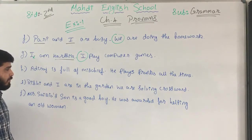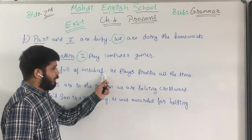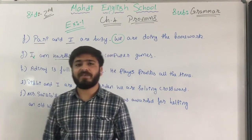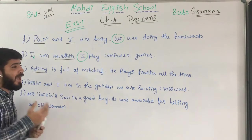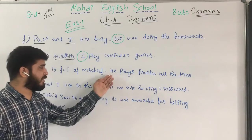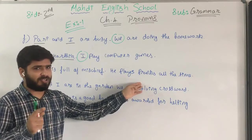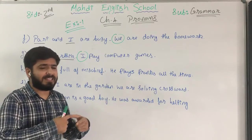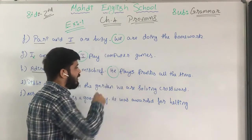Sentence H: 'Adiraj is full of mischief. He plays pranks all the time.' Which is the noun? The noun is Adiraj. And how is the name Adiraj replaced? He plays the pranks — 'he' means Adiraj. So the noun Adiraj is replaced by the pronoun 'he.' So here 'he' is the pronoun.